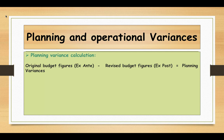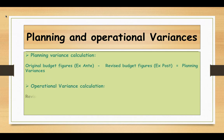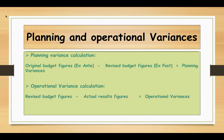Original standards need to be adjusted in order to reflect the current situation, so that's why we are revising the original budget. For operational variances, you always need to compare with the revised budget. Take the revised budget figures and subtract the actual results to get the operational variances. The revised budget should be compared with the actual figures in order to make a meaningful comparison.